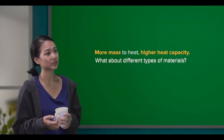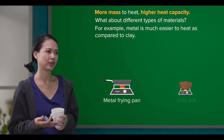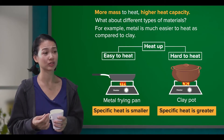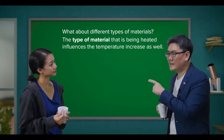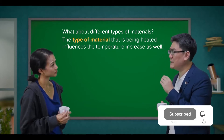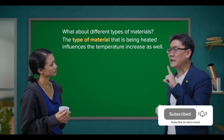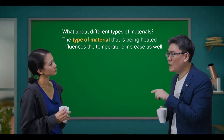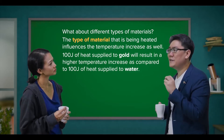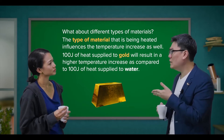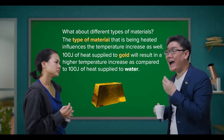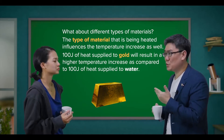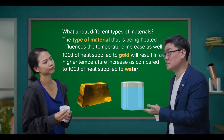What about different types of materials? For example, metal is much easier to heat as compared to clay, right? Good point. The type of material that is being heated influences the temperature increase as well. Said differently, 100 joules of heat supplied to gold will result in a higher temperature increase as compared to 100 joules of heat supplied to water.